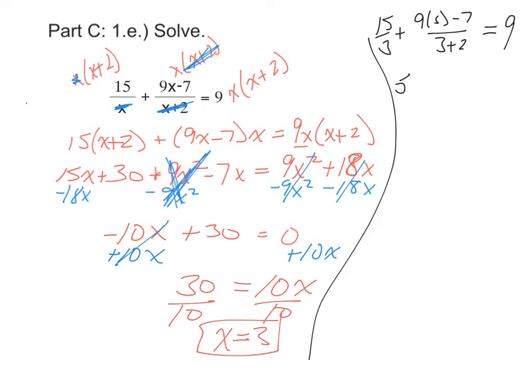But let's go ahead and try and figure it out anyway. 15 divided by 3 is 5, plus 9 times 3 is 27, 27 minus 7 is 20 over 5, and 20 over 5 is 4. And 5 plus 4 does equal 9. So yes, x equals 3 is our solution. That's it.